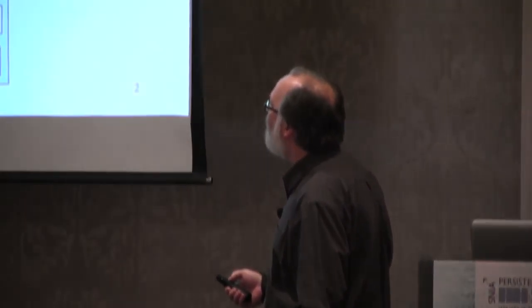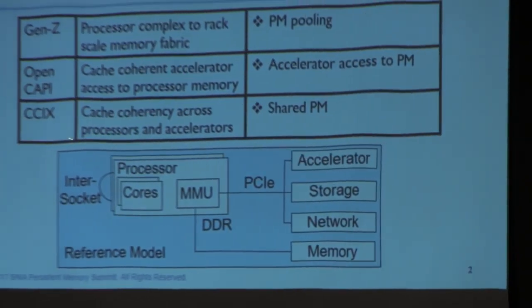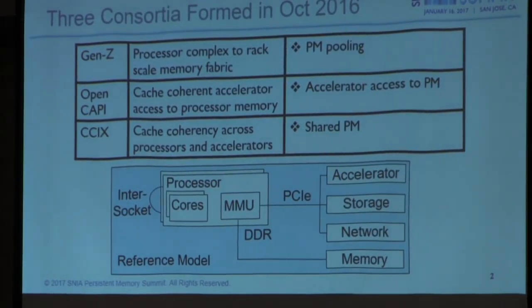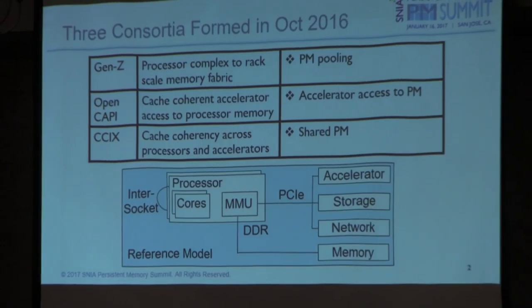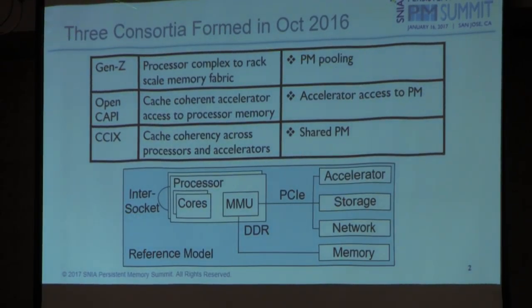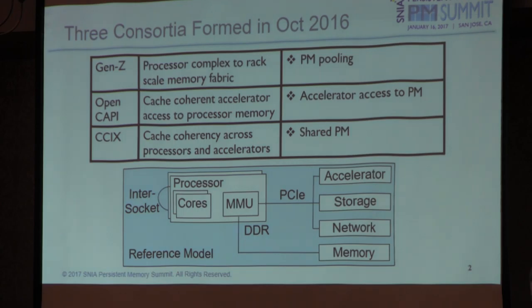You've already heard their names: Gen Z, OpenCAPI, and CCIX. I've given the really short sound bite as to what these things are, and that's a little tricky to do partly because of the lack of deeper technical information available to the public, and also because they're evolving — they're taking on more features. In some cases there have already been multiple versions before moving into the consortium. So it's a little bit of a moving target.